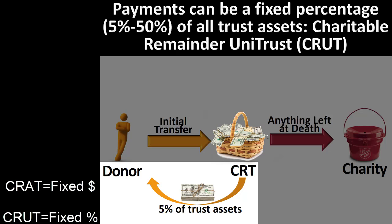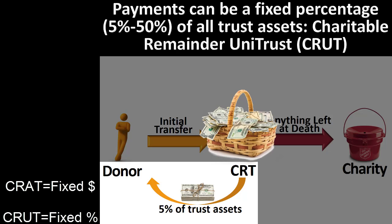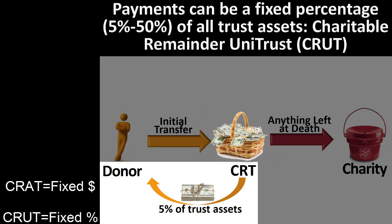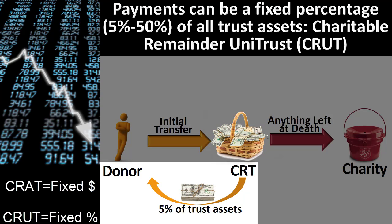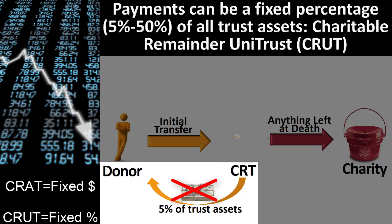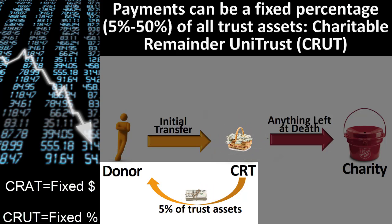If inflation also results in higher interest rates for investments held by the CRUT, then its payments could increase over time, helping to maintain the purchasing power of the payments. Both the CRAT and CRUT are subject to investment risk. The risk in a CRAT is that the payments will cease due to the exhaustion of all CRAT assets. The risk in a CRUT is that the payments will become smaller and smaller.